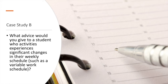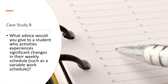What advice would you give to a student who experiences significant changes in their weekly schedule — for example, a variable work schedule that changes week to week? If you have a fairly fixed schedule, you might make the weekly plan once at the beginning of the semester and stick roughly to it all the way through. But if there's a lot of fluctuation, a different approach is to use the weekly schedule as a weekly planning activity — taking some time on a Sunday night or Monday morning to plan out the week ahead based on what work and class look like that specific week.